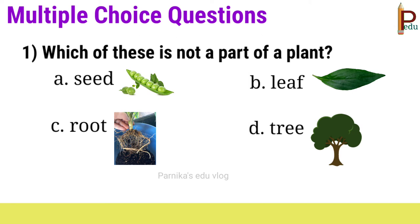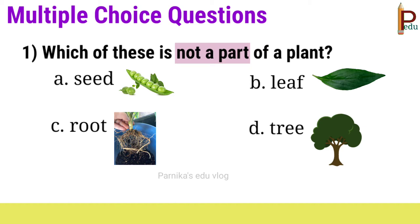First one: which of these is not a part of a plant? Seed, leaf, and root are parts of a plant. So the answer is tree.